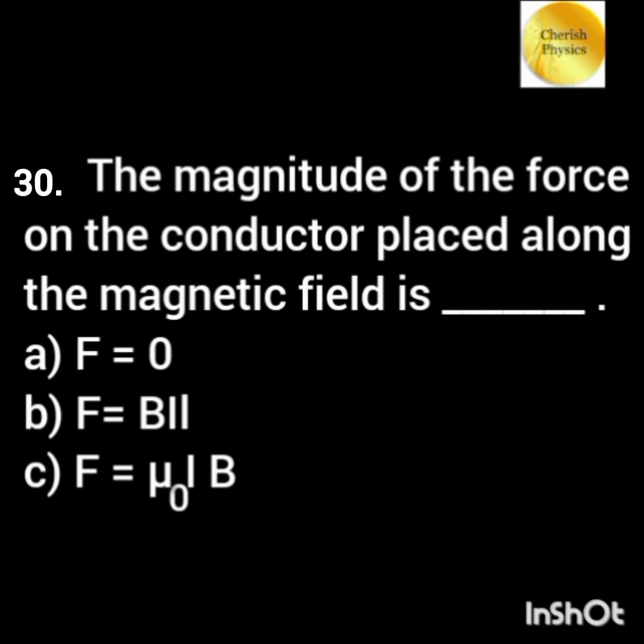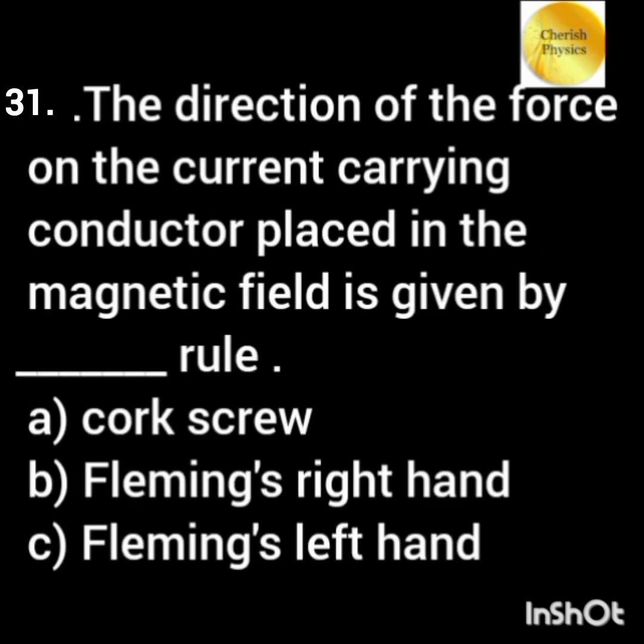The magnitude of the force on the conductor placed along the magnetic field is dash. The direction of the force on the current-carrying conductor placed in a magnetic field is given by dash.